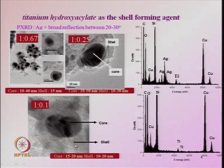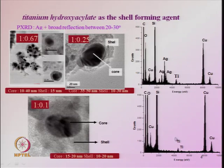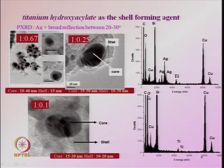In EDAX, passing the electron beam through the core shows both silver and titanium, while passing through the shell shows only titanium with no silver peaks. Copper and silicon peaks appear from the TEM grid and detector respectively, and carbon from impurities. Oxygen is present in both core and shell spectra because the shell sits on top of the core.